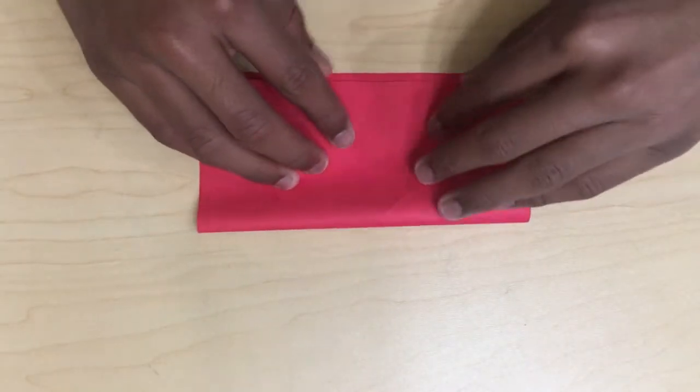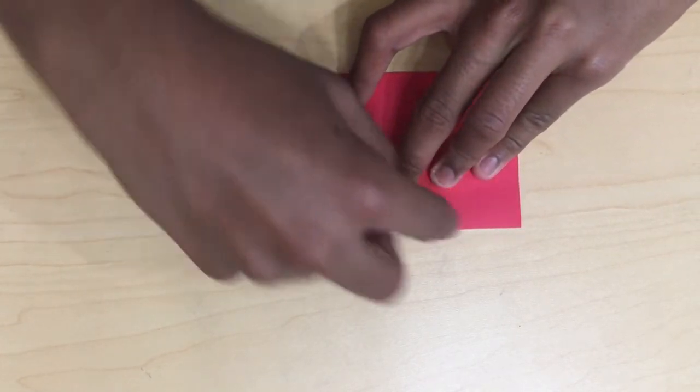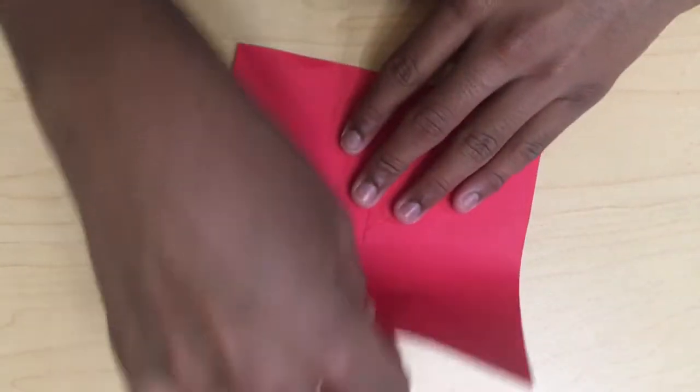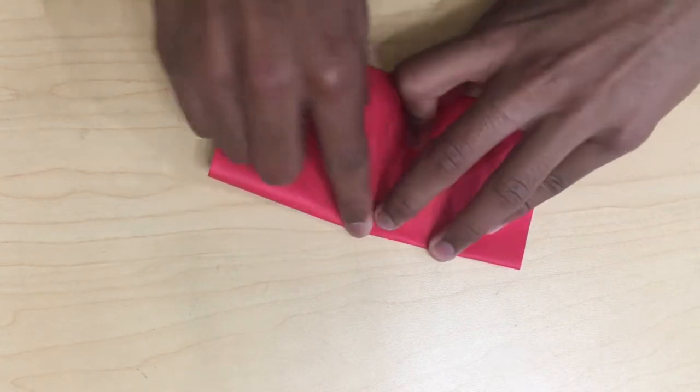Then fold the paper in half, put it on the tip, and crease it. Then unfold it, and fold it in half, and then crease it.